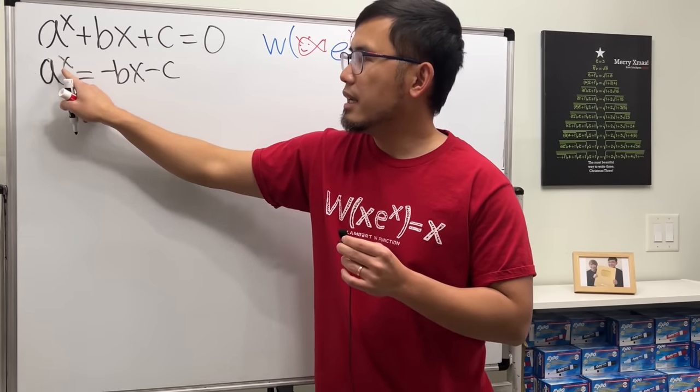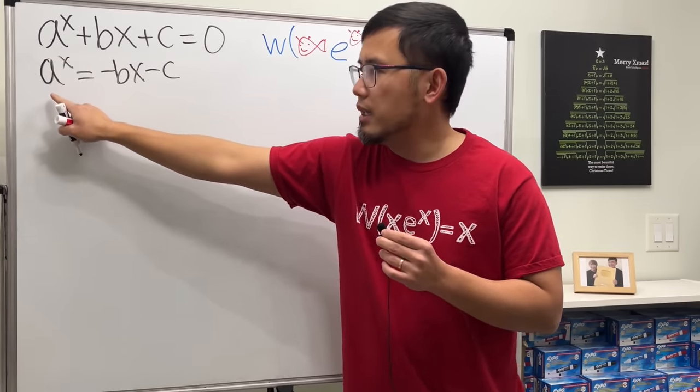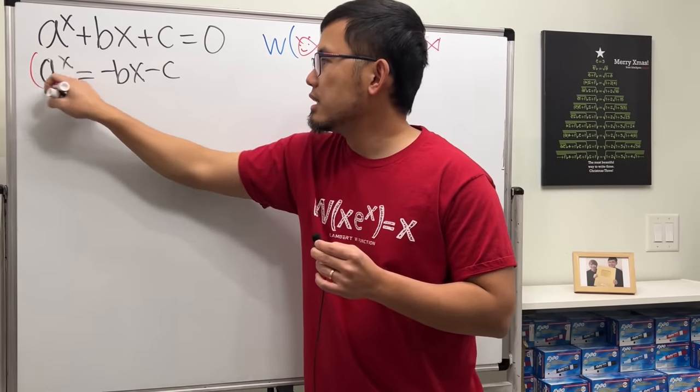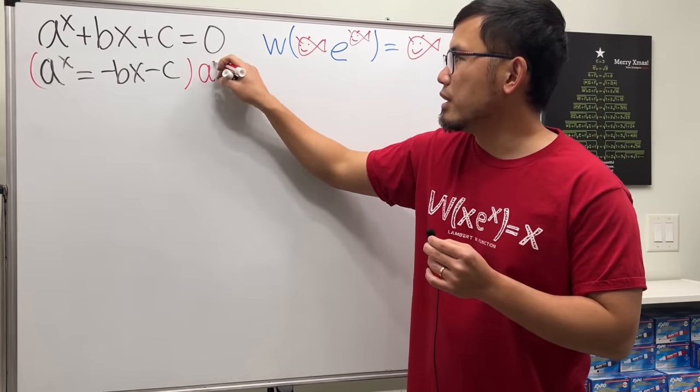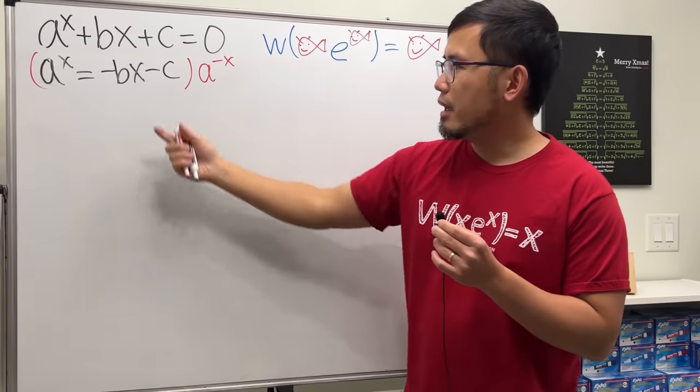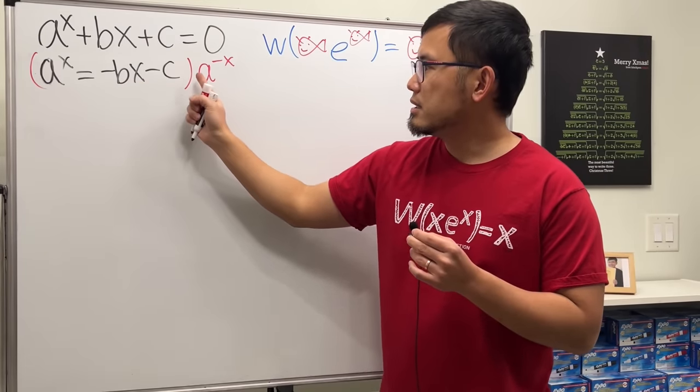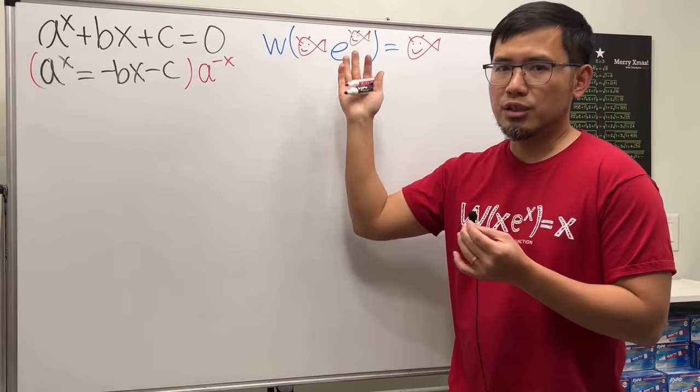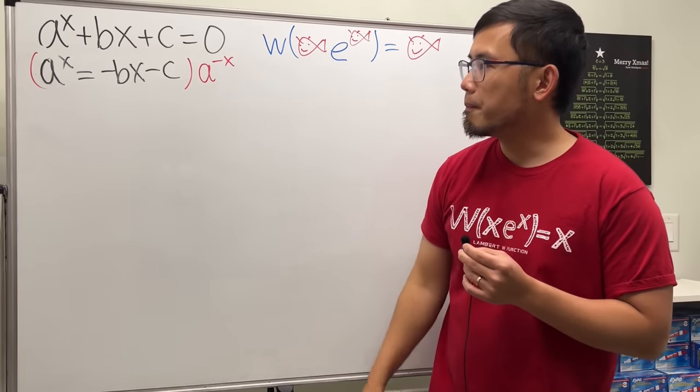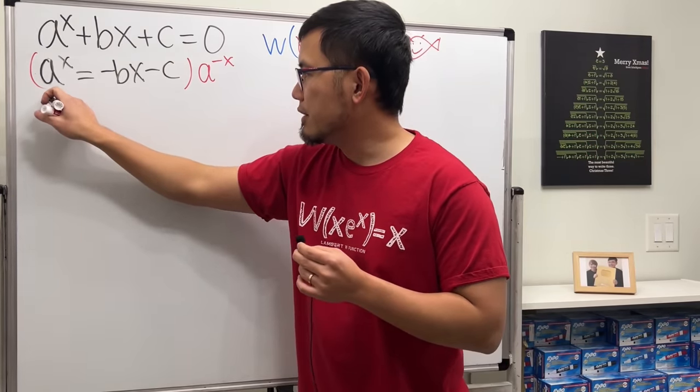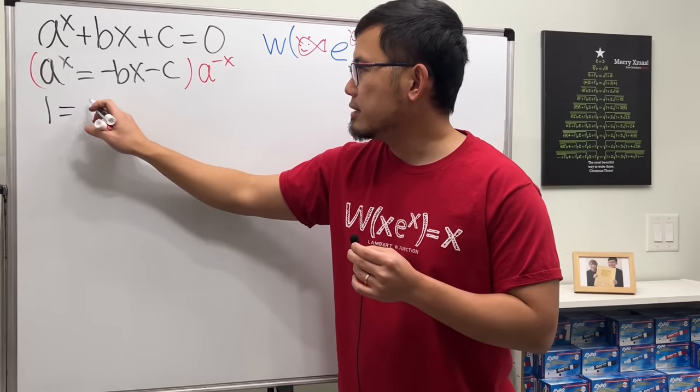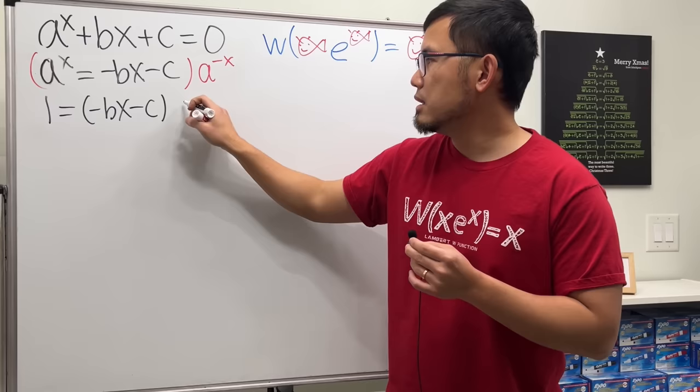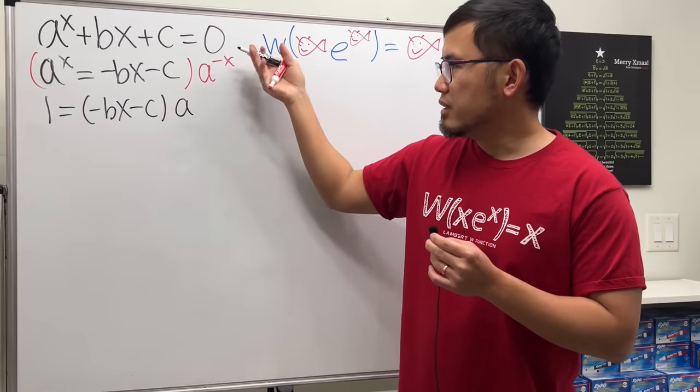That's good. And then I would also like to bring the a to the x power to the right-hand side. But do not subtract. Instead, let's multiply both sides by a to the negative x power. And that's what I mean by this times that. And then the x is in the front and also in the exponent. That's pretty much the setup for the Lambert W function. Alright, so on the left-hand side, we have one. And then for the right-hand side, we'll just have negative bx minus c times a to the negative x power.